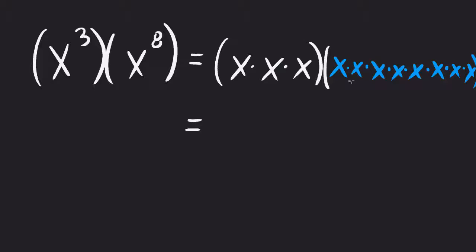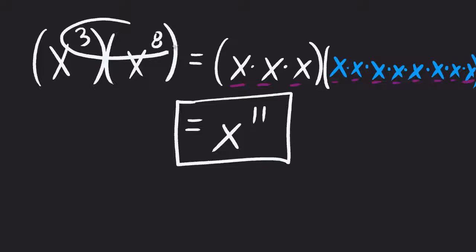So really if I want to look at this how many do I have all together? I have 1, 2, 3, 4, 5, 6, 7, 8, 9, 10, 11. So I have 11 of these which is the exact same thing as if I took these two numbers and I added them together. Okay, so that's how the property works.